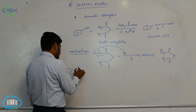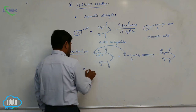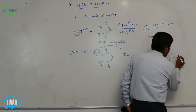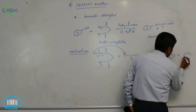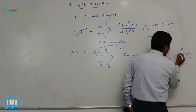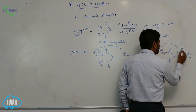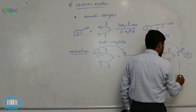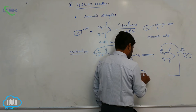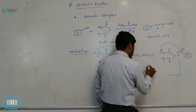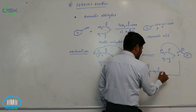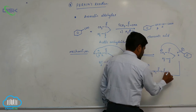This carbanion of acetic anhydride reacts with benzaldehyde to form: CHO minus CH2, C double bond O oxygen, C double bond O, CH3.